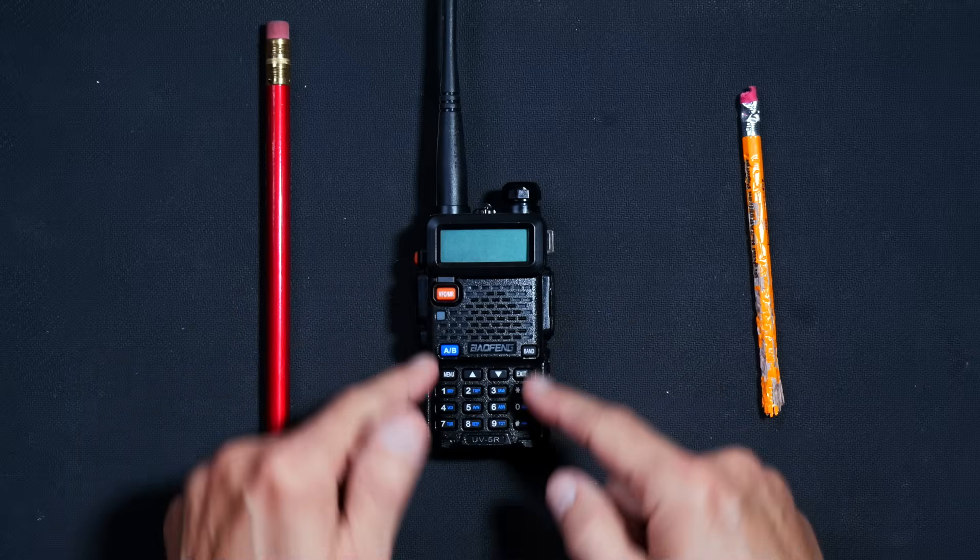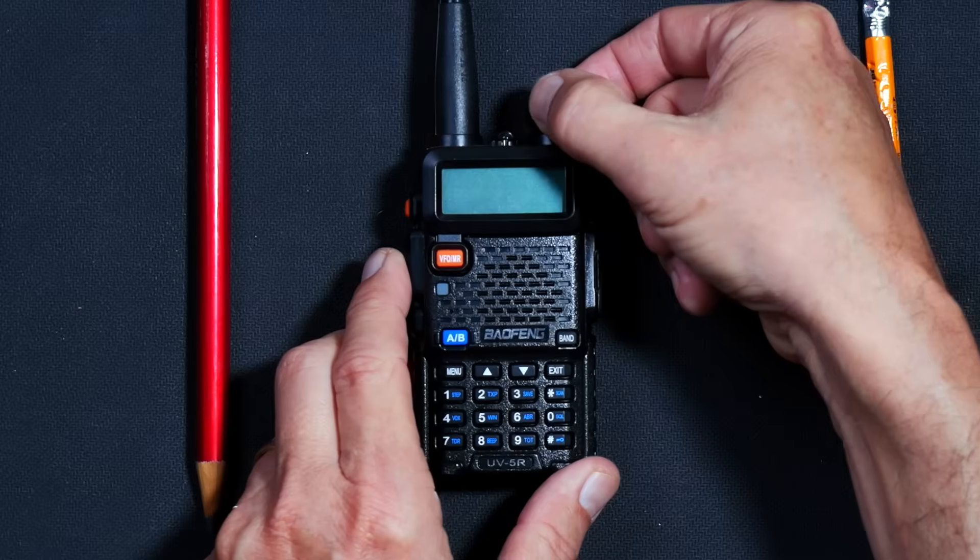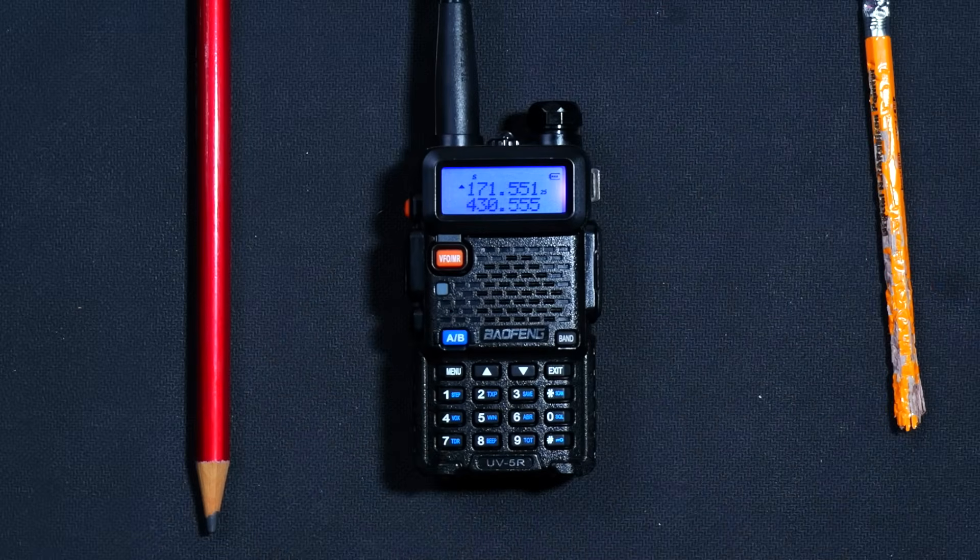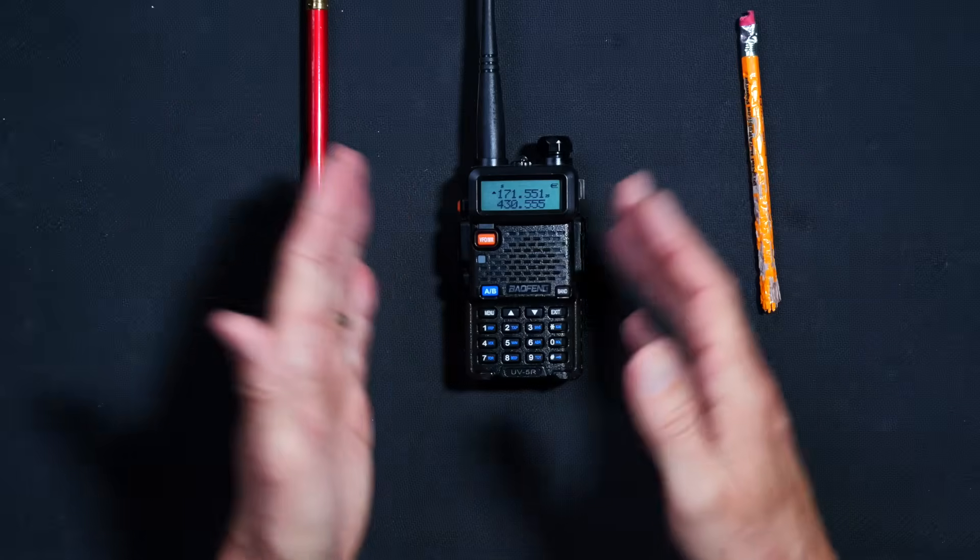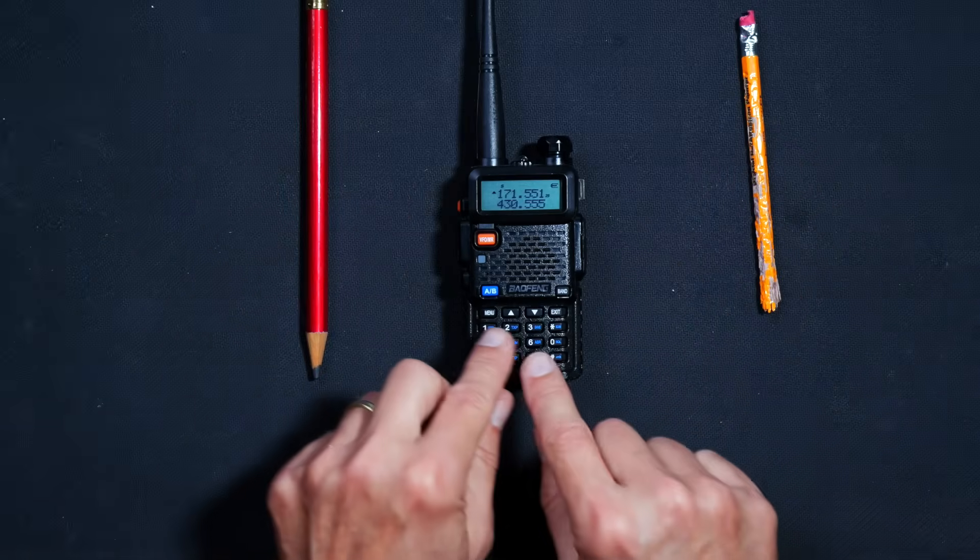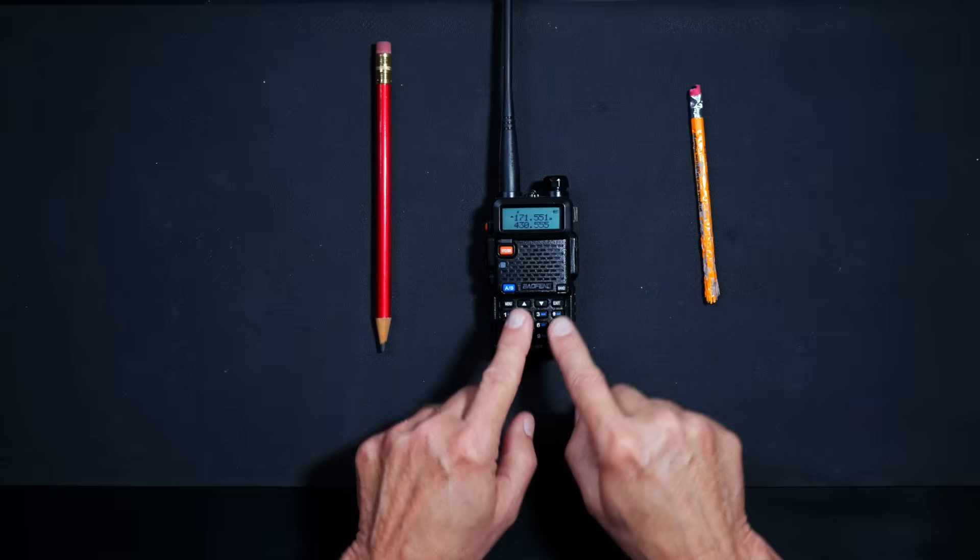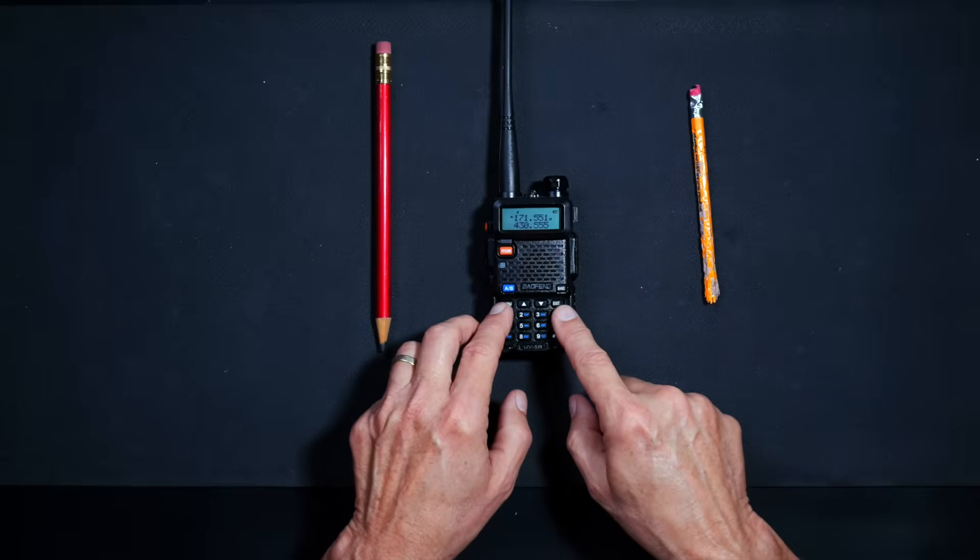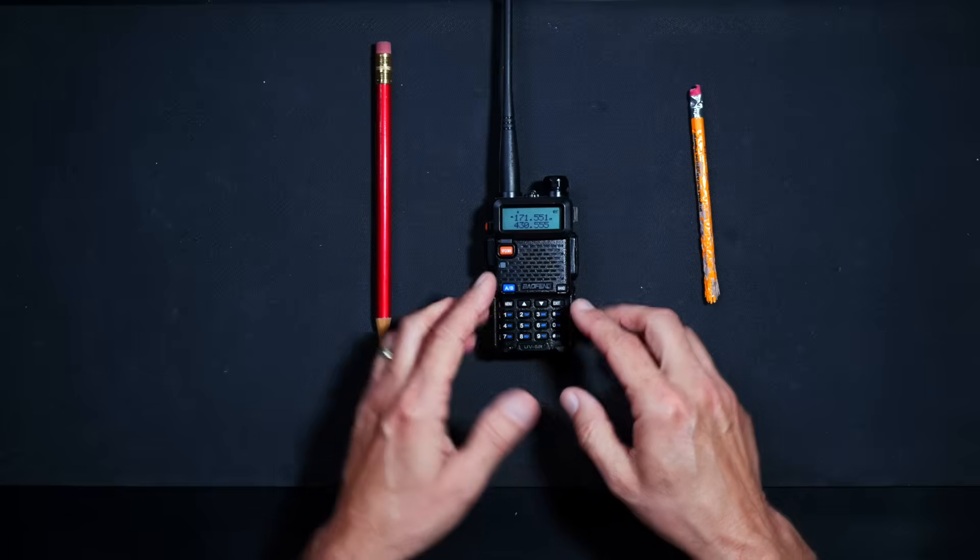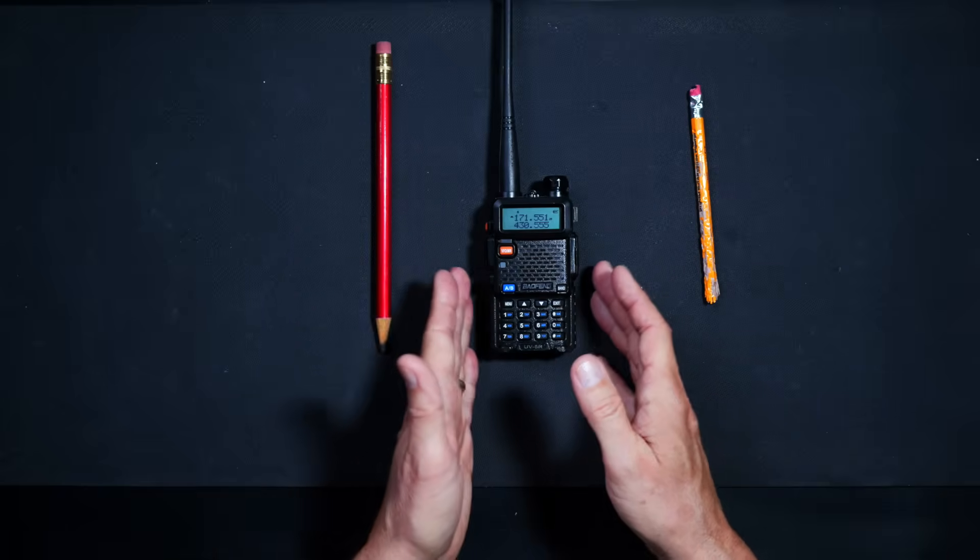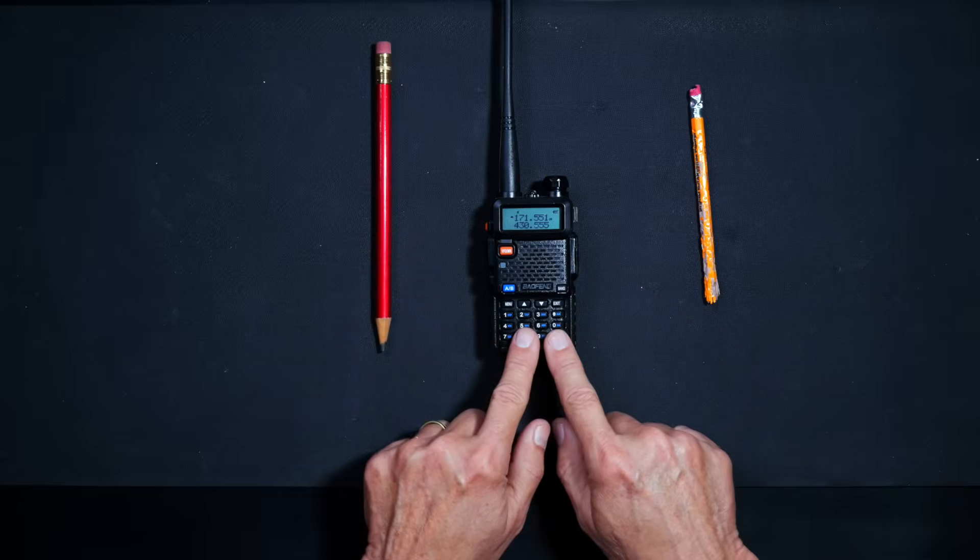To get that frequency into your radio, first of all, make sure that your radio is powered on. Next, put the radio into VFO mode. This is the mode that allows you to type frequencies directly into the radio. There are two modes on this radio: VFO mode is for typing frequencies directly in, and channel or memory mode is for going through the frequencies that you have pre-saved as channel numbers so that you can easily scroll through them.